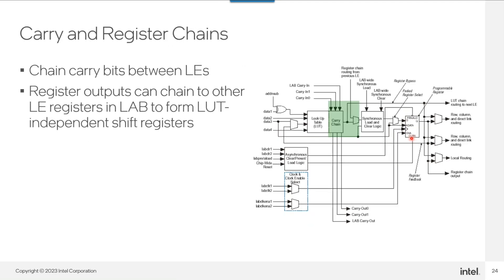We also have carry and register chains — connections between logic elements in order to create larger combinatorial functions. Carry-in can come from another logic element or LAB, and connections go out to another logic element or LAB as well.